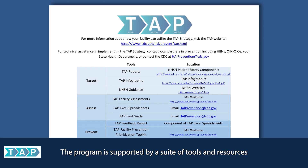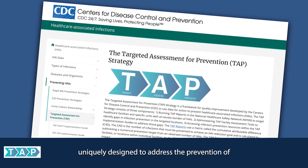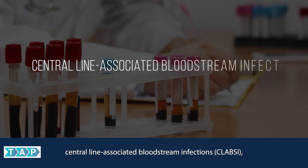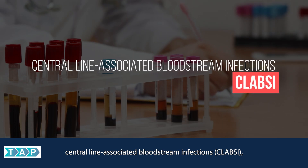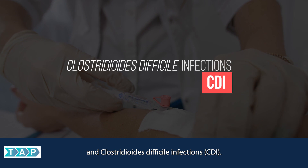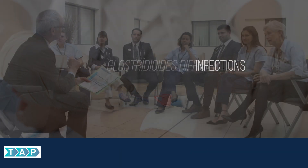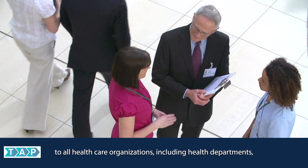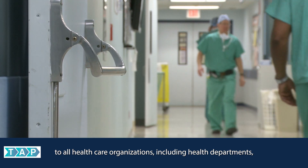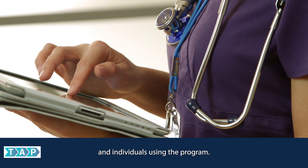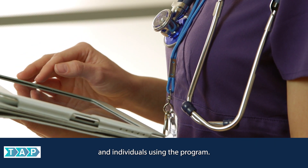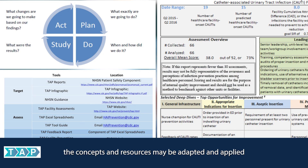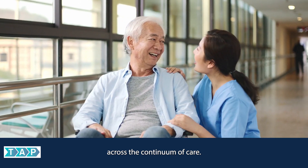The program is supported by a suite of tools and resources uniquely designed to address the prevention of catheter-associated urinary tract infections, central-line-associated bloodstream infections, and Clostridioides difficile infections. A panel of CDC experts provides technical assistance at no cost to all healthcare organizations, including health departments, hospital associations, health systems, and individuals using the program. While the TAP Strategy was developed primarily for the acute care setting, the concepts and resources may be adapted and applied across the continuum of care.